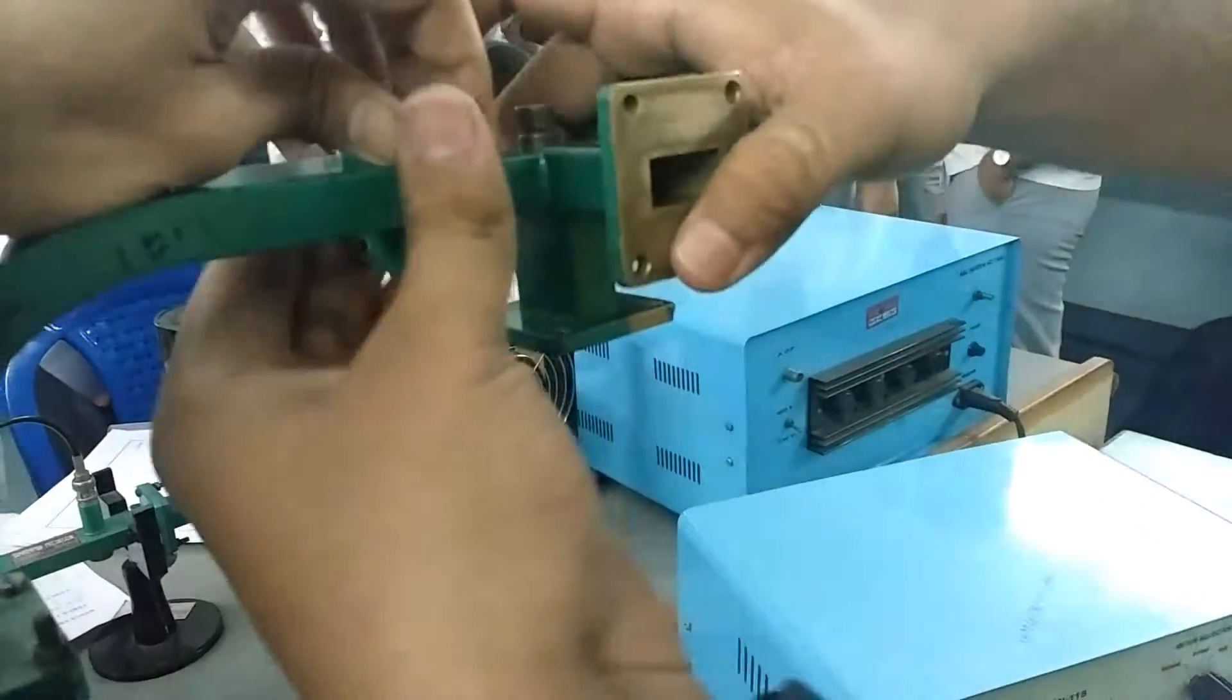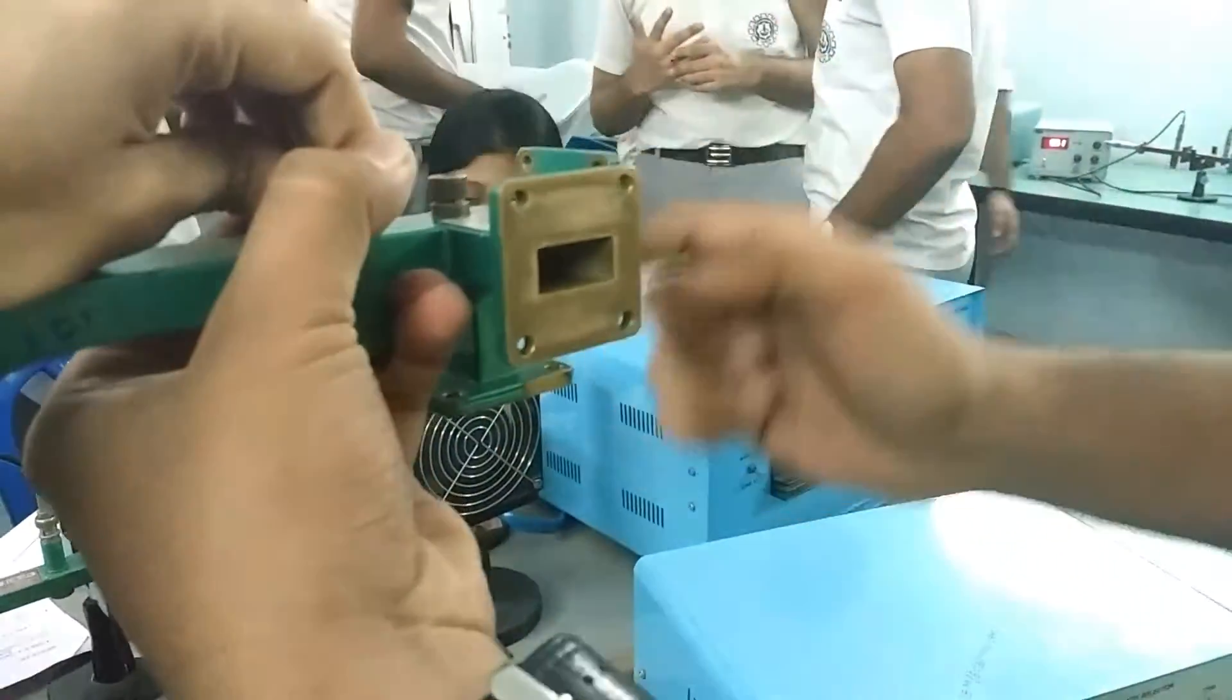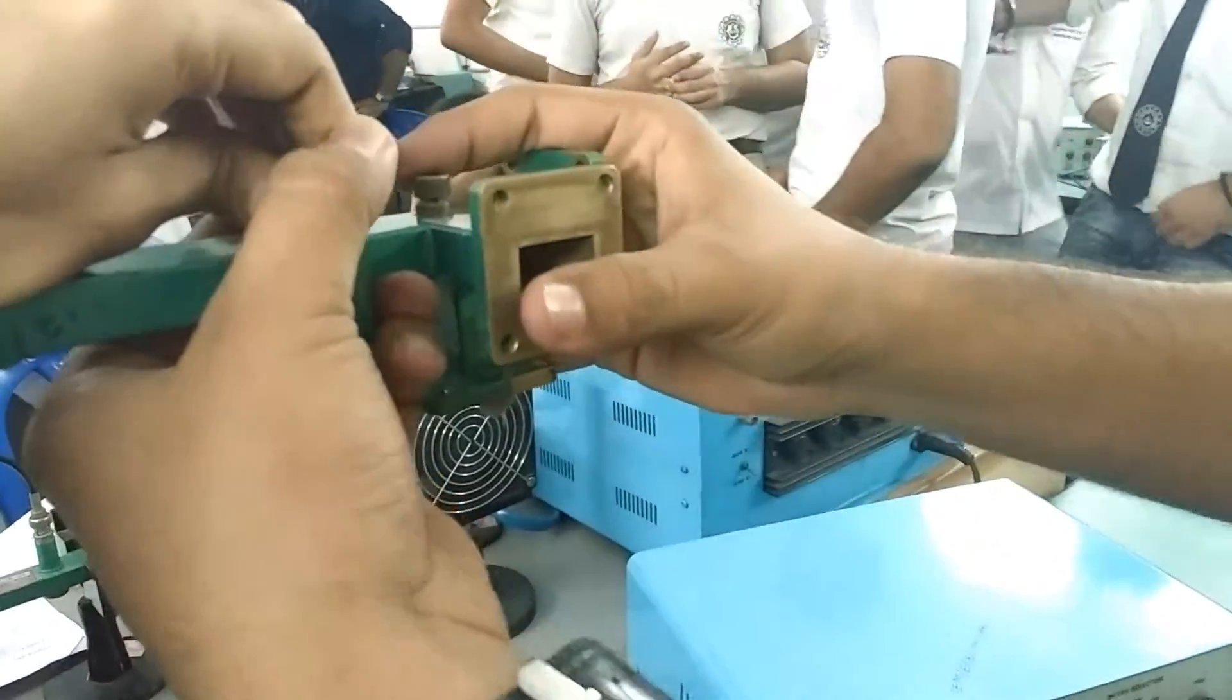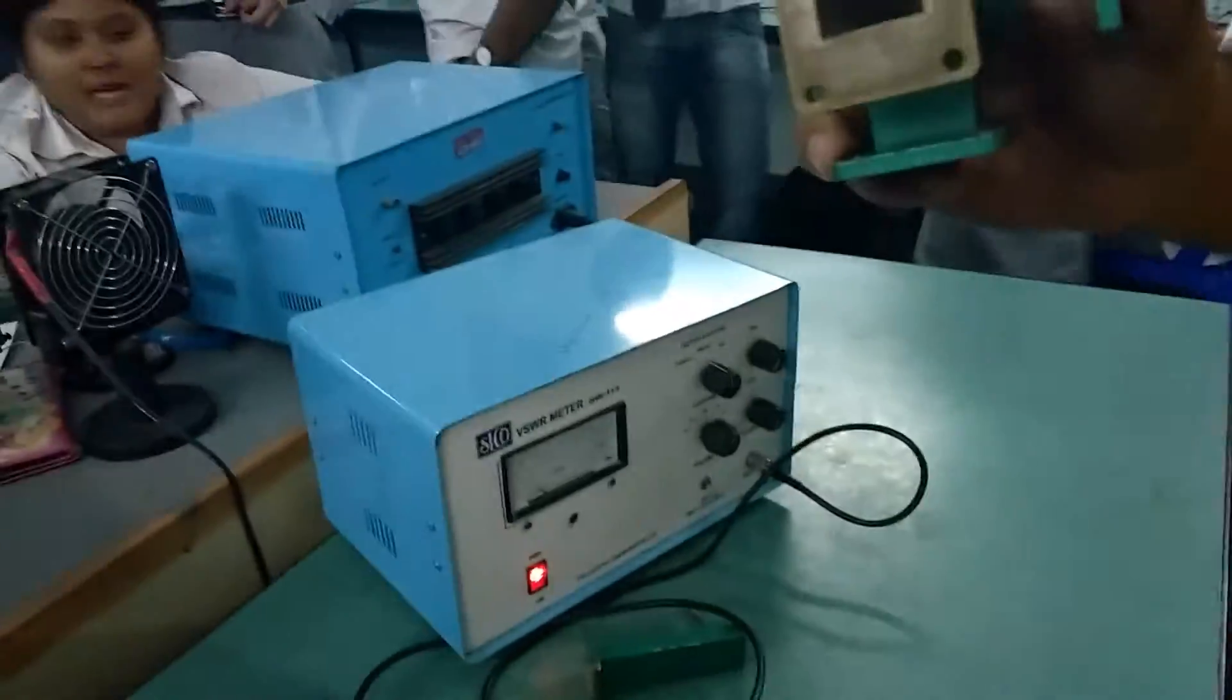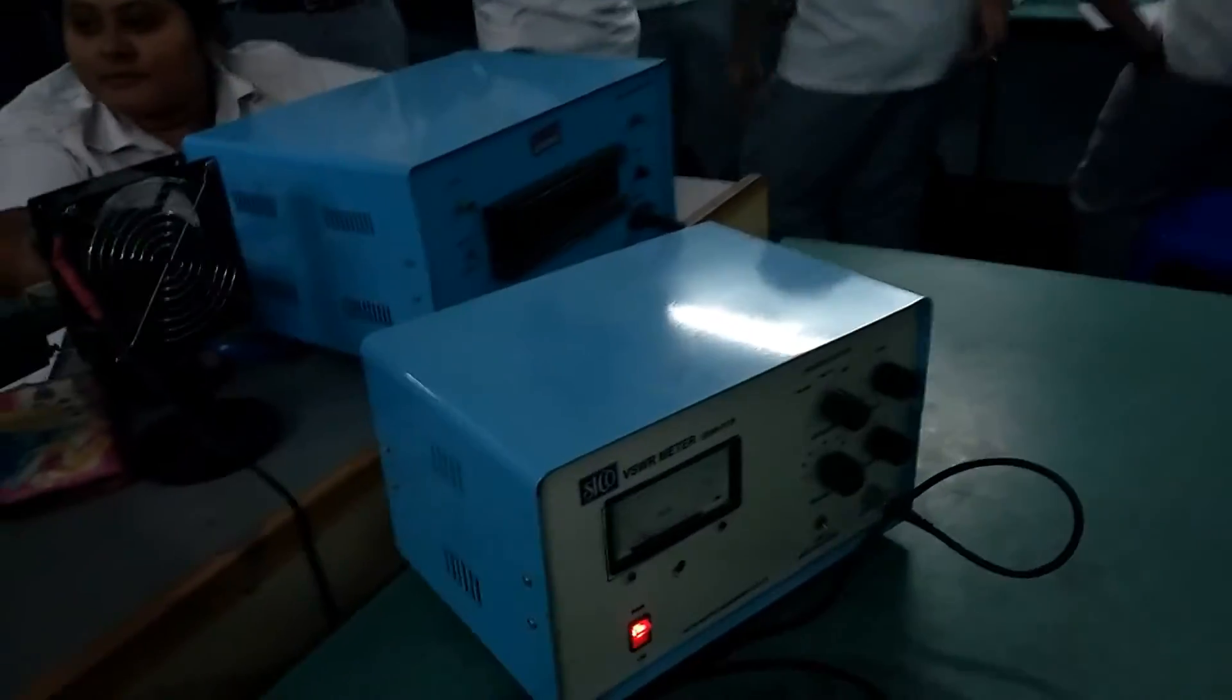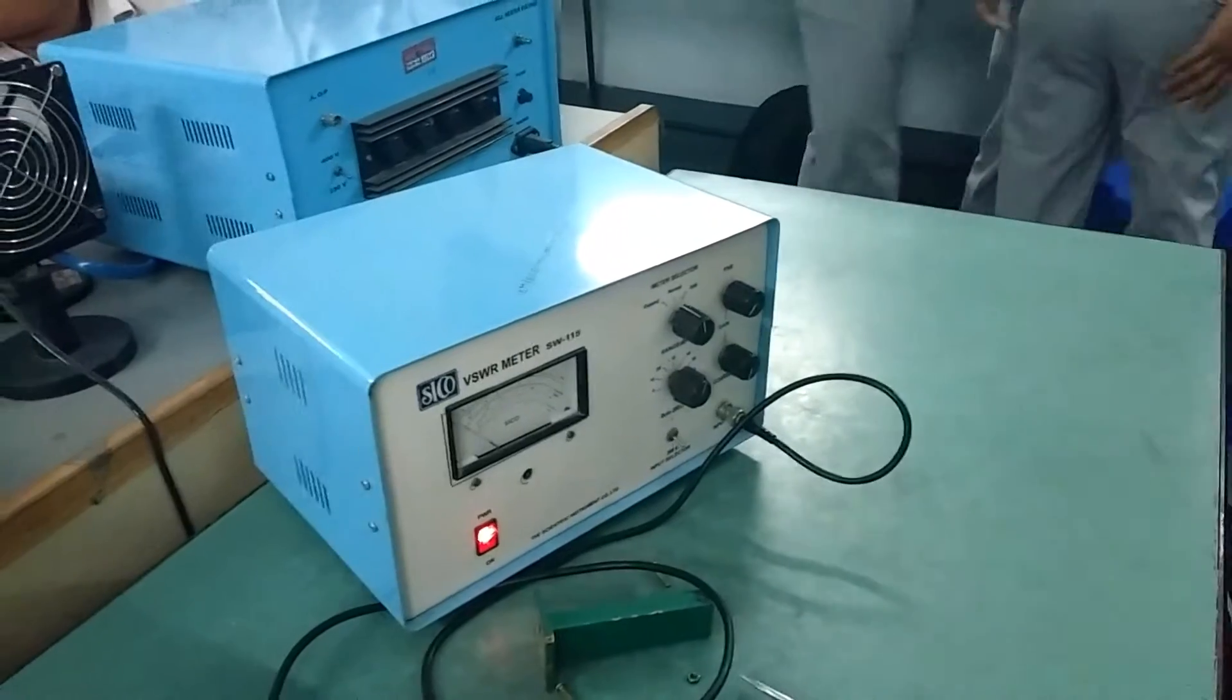Like this we will put another port as our input port and similarly we will have another three readings. In total there will be twelve readings. And we know that the scattering matrix is a four cross four and the others will be the S11, S22, S33 and S44 which will be zero.